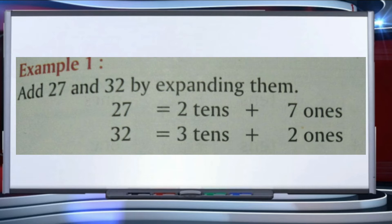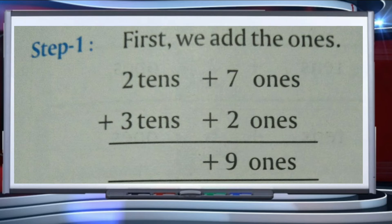We will write 27 as two tens plus seven ones, and 32 is written as three tens plus two ones. Step one: we have to add the ones first — the numbers on the ones place. We are having seven ones and two ones, so we add seven and two. Seven plus two equals nine, so seven ones plus two ones gives us nine ones.